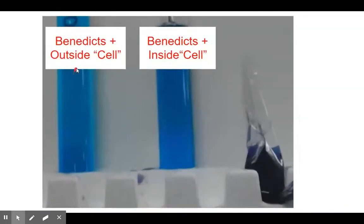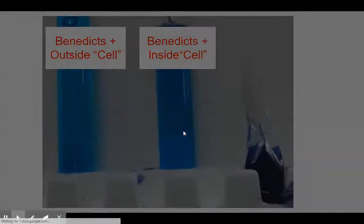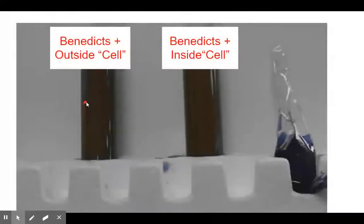We added Benedict's solution to outside the cell and Benedict's inside the cell. How does it look? Well, guess what? We didn't heat it up yet. So here is the heat. After the heat, we see that they both turn red. They both change color, even if it's not the beautiful red that you're expecting. That shows it's going to be positive for glucose.